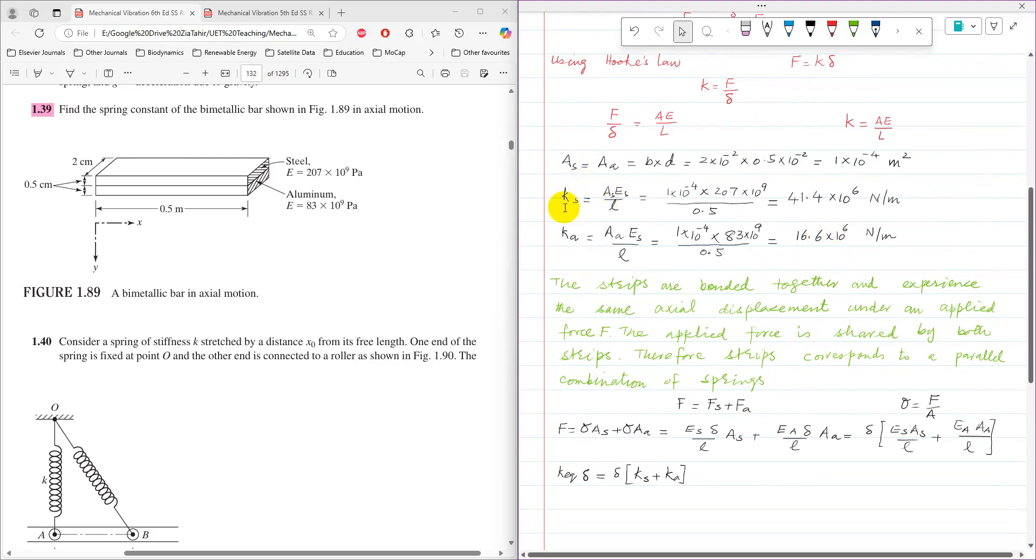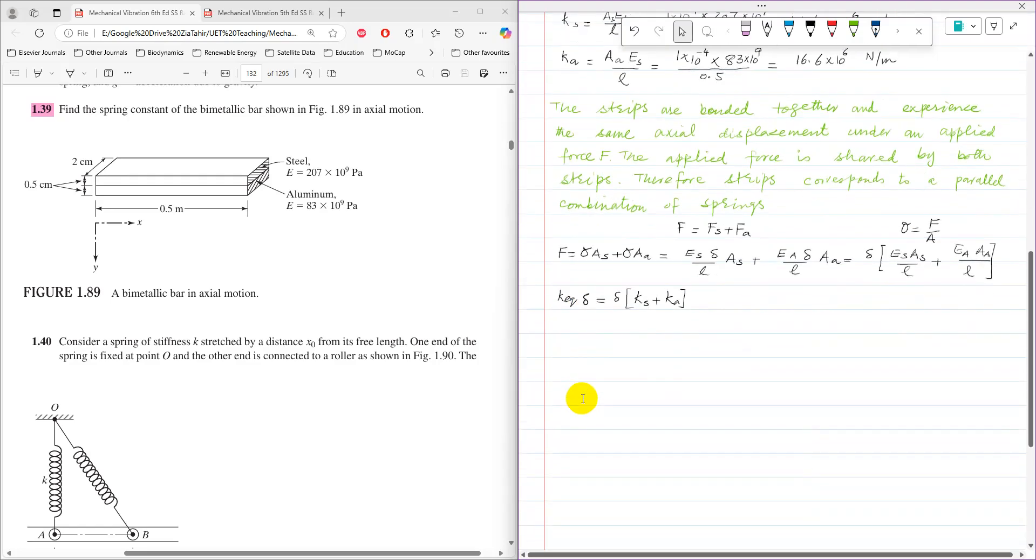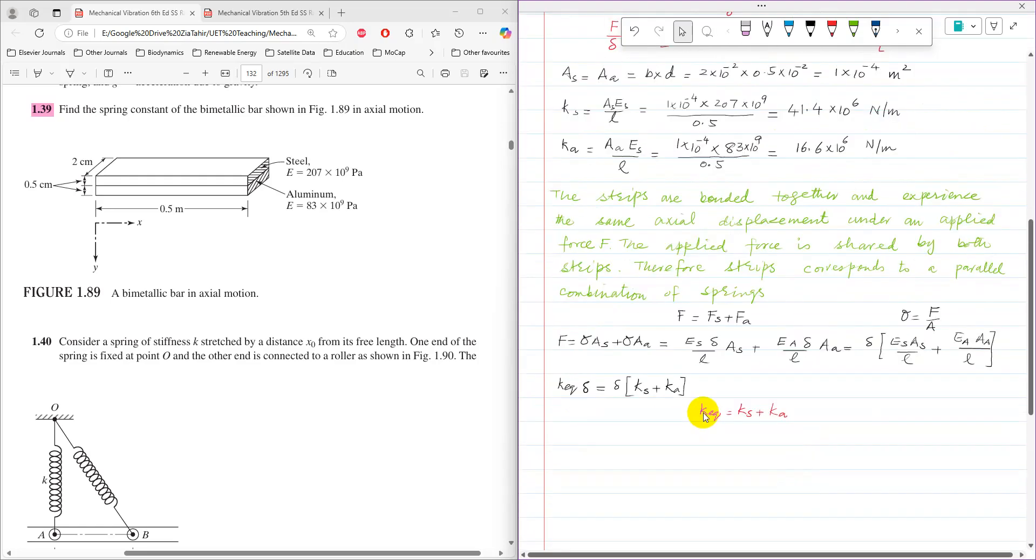This is the same expression used to find K_s and K_a. Since F equals K_equivalent times delta, we can derive that K_equivalent equals K_s plus K_a, which is the formula for springs in parallel.